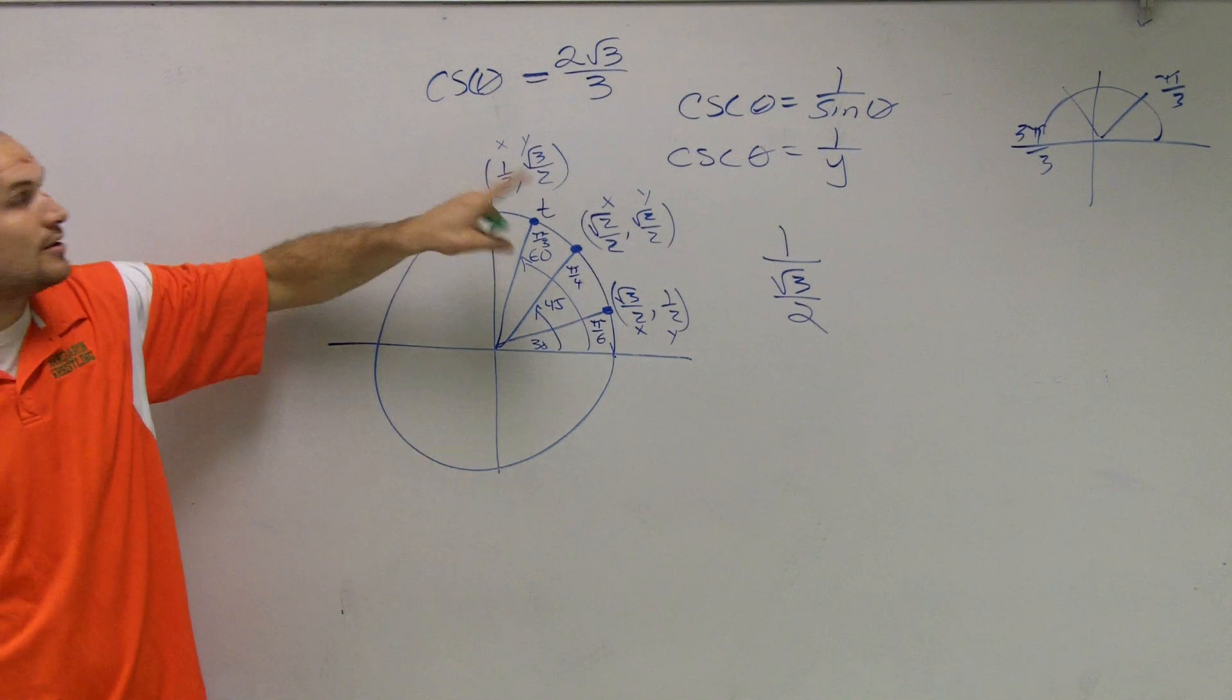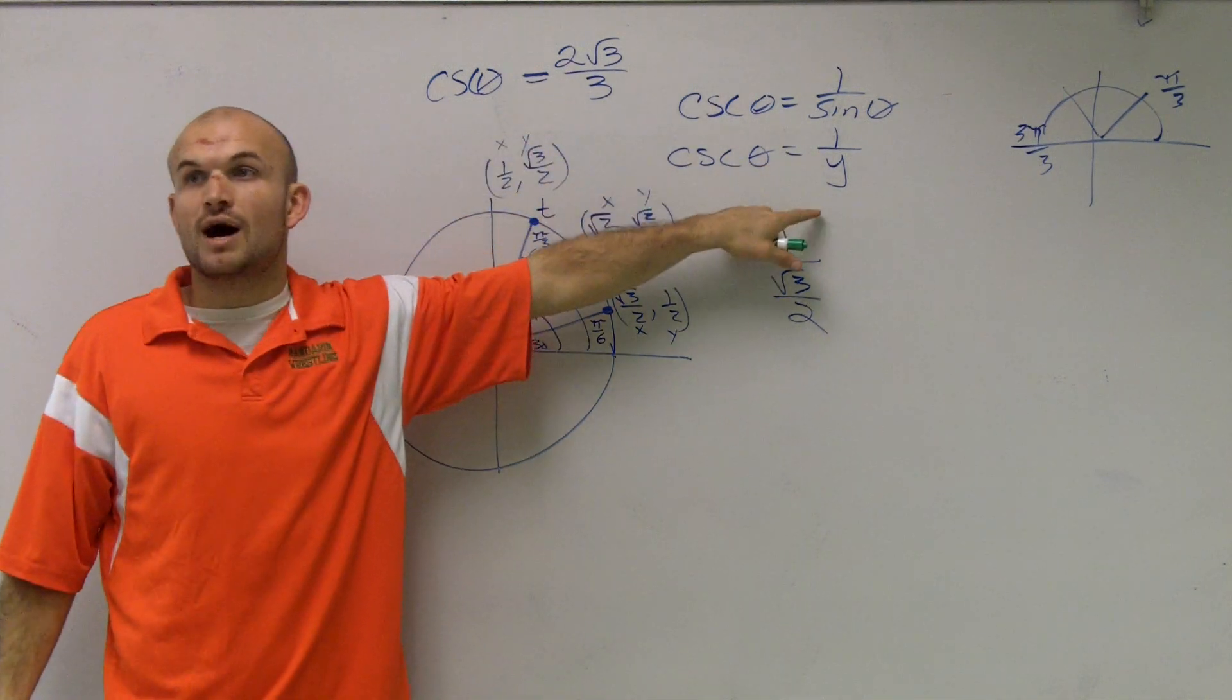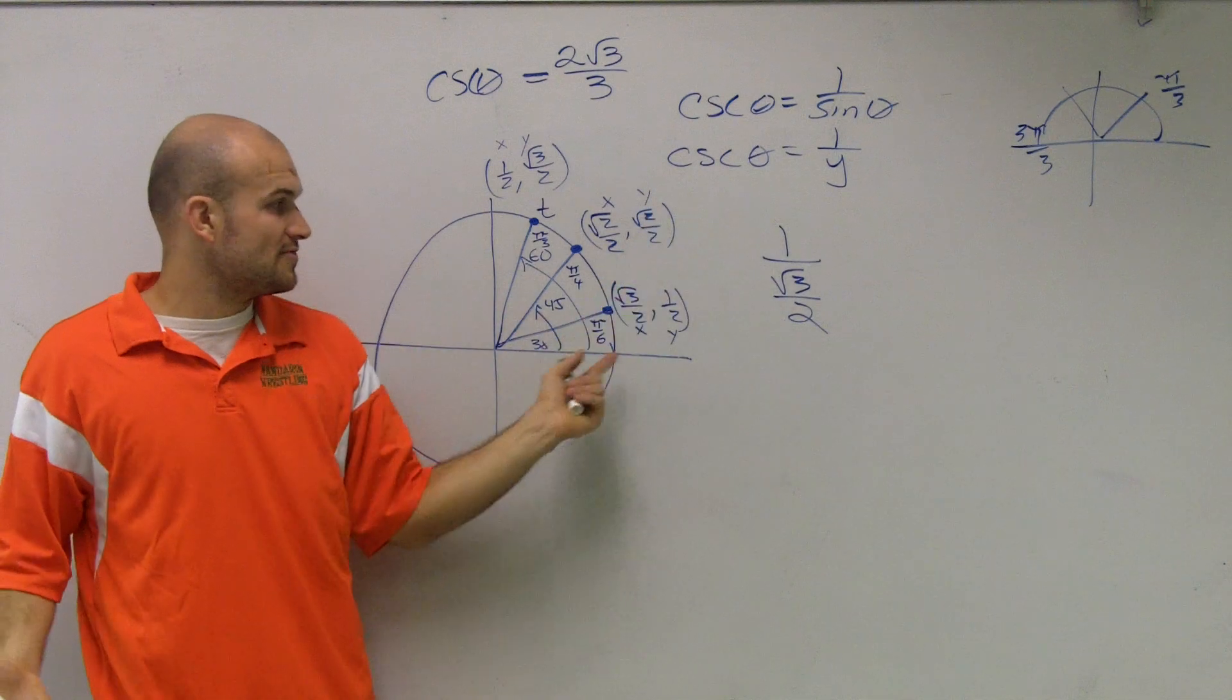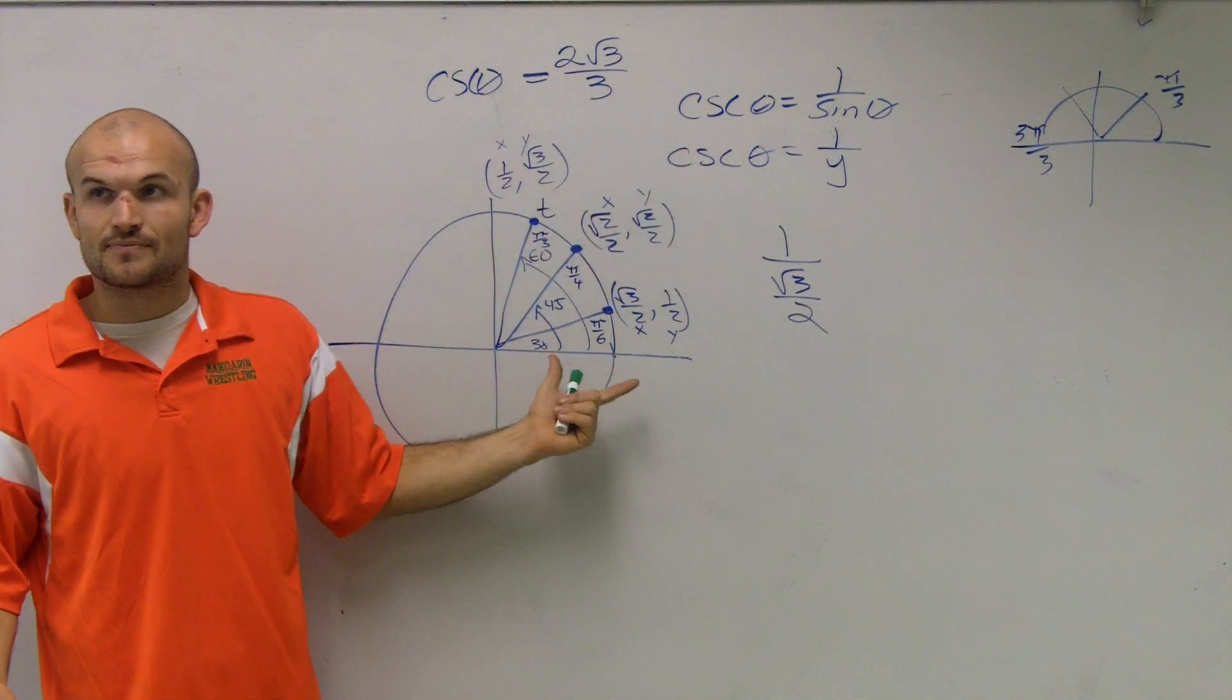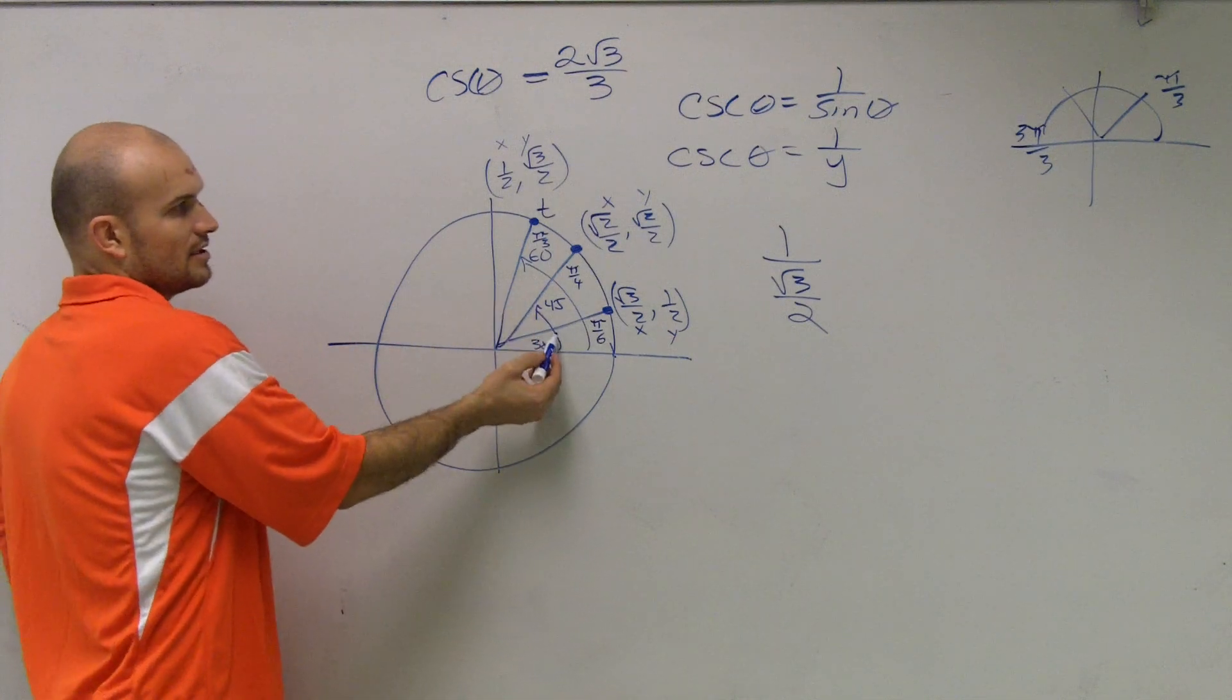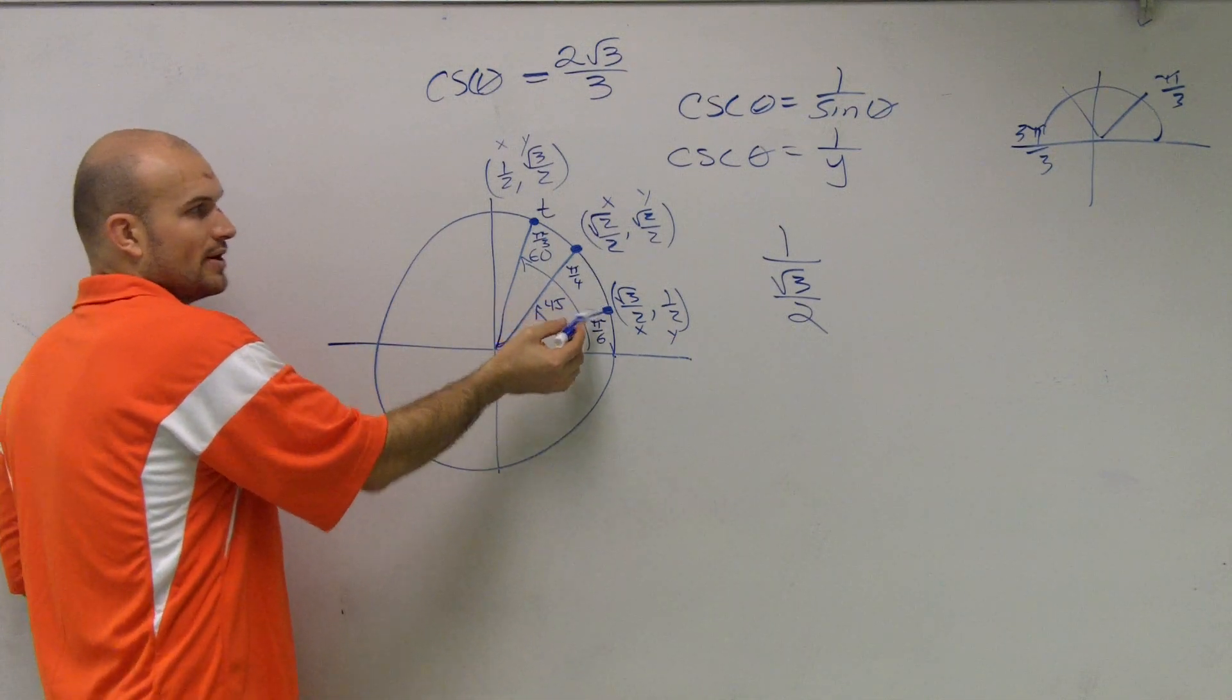Not theta, not theta. The cosecant, guys, is 1 over y. They're saying, what theta does that, what point does that correspond to? What theta, what angle, does that correspond to as a point?